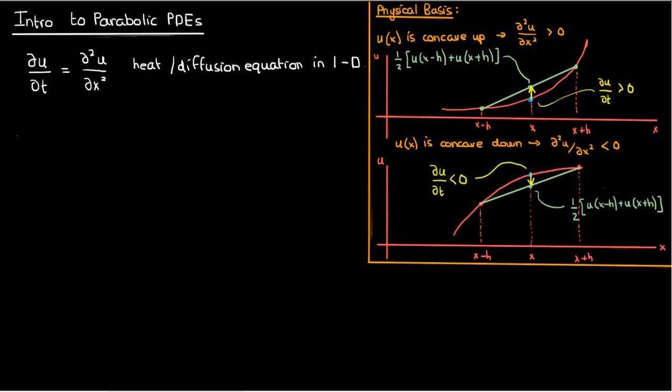In the end, what the heat or diffusion equation says is that the rate at which a function u, could be temperature, could be concentration, the rate at which the function u changes at a point is proportional to its concavity at that point.